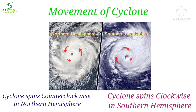If you observe the movement of any cyclone, you will notice that cyclones spin as they travel. In the northern hemisphere, cyclones spin counterclockwise, whereas in the southern hemisphere they spin clockwise. This happens due to the Coriolis effect. Let's learn about the Coriolis effect.